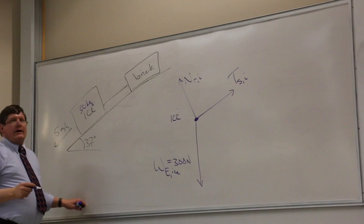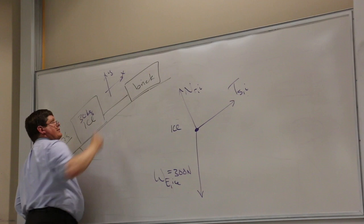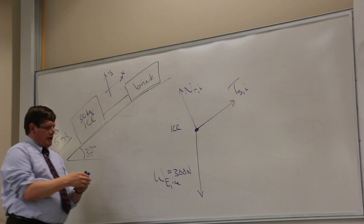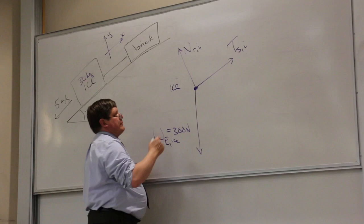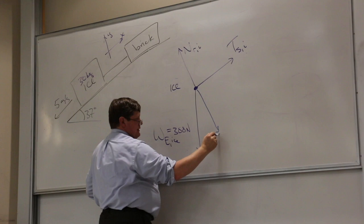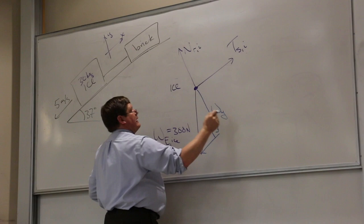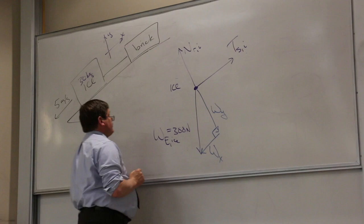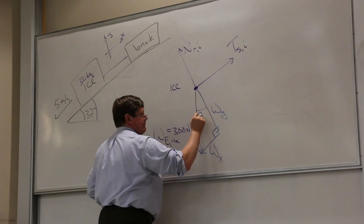Whenever I have a ramp problem, I rotate my coordinate system so that it lines up with the ramp. Then all of my forces are lined up with my coordinate except for weight. I always break it up the same way — I look in the direction of the normal force, go the other way until I can make a 90-degree turn. The angle of the ramp is this angle here.